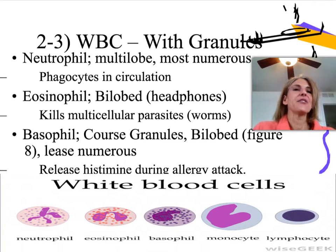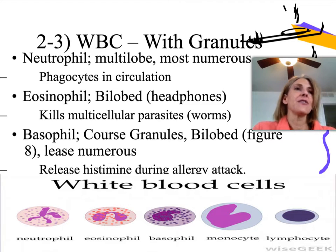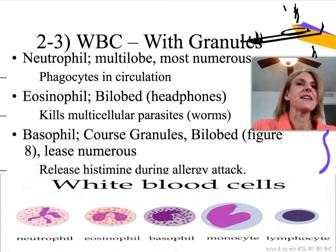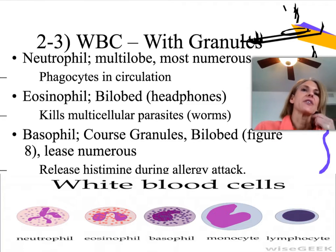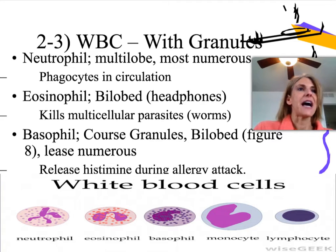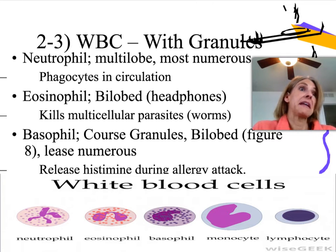The basophil — the one in the middle at the bottom — you typically under a microscope can't even see the nucleus because the granules are so large. So coarse granules, they are also bilobed, but you don't really see it as a figure-eight nucleus. These are your least numerous, but they're filled with histamine, which is a vasodilator. That plays a big role in allergies, which is why we take an antihistamine.